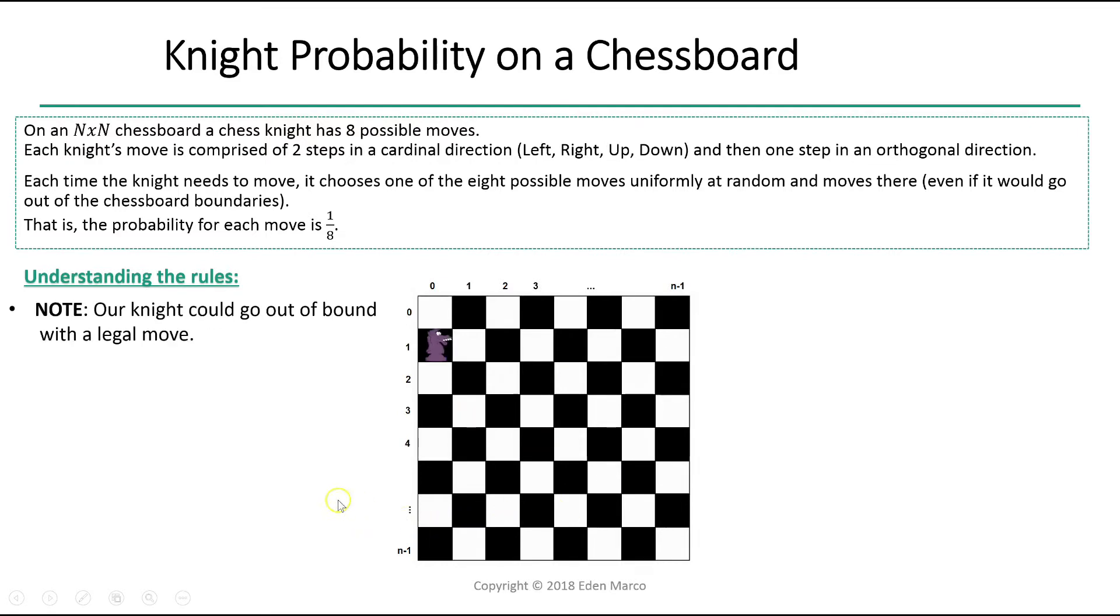Now let's note that our knight could actually go out of bounds on our chessboard after executing a legal move. For example, if our knight is located here and we go two steps down and one step left, which is a legal knight's move, we go out of bounds.